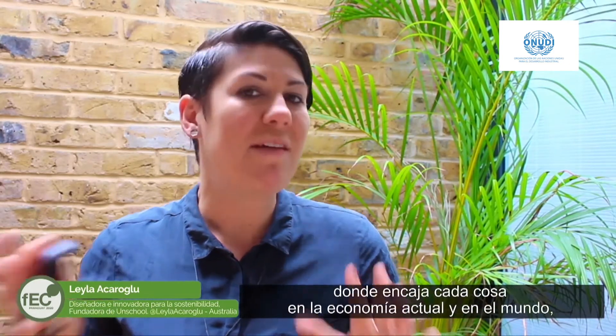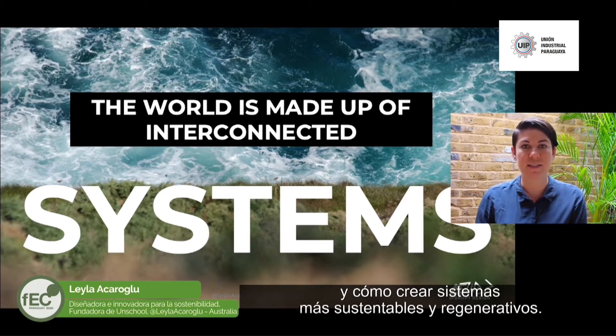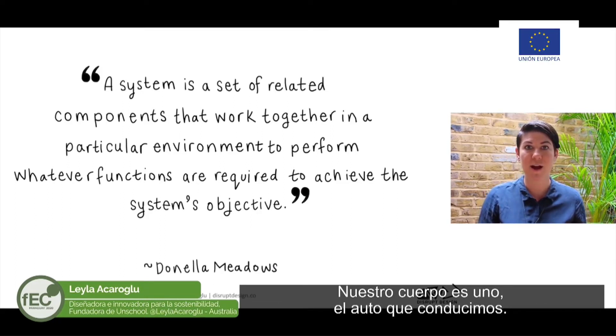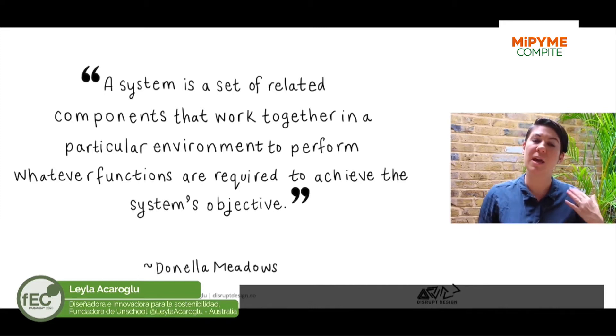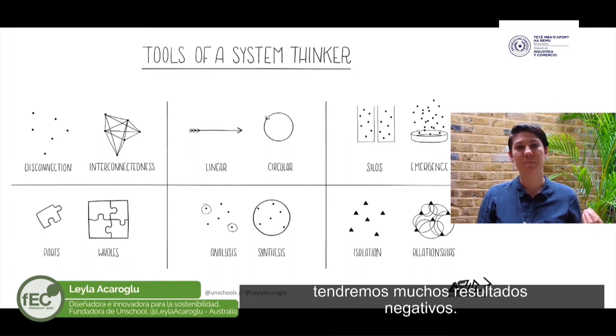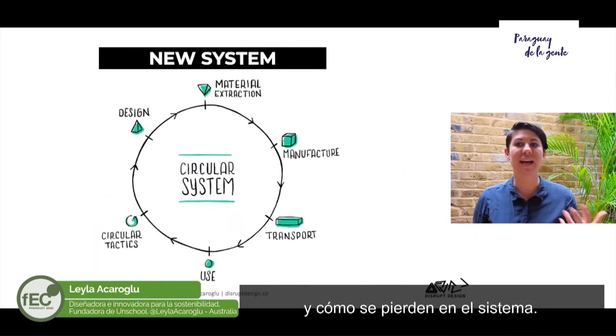If we look at these two systems, we can design goods and services that fit within each one, because the world is made up of complex systems and systems thinking helps us understand where things fit within the current economy, the interaction and relationships between those things, and how we can create more regenerative and sustainable systems. A system is really anything around us — our body is one, the cars we drive are one. They all interact; if we don't have fuel or electricity or a working wheel, the car won't work. Equally, if we can't create systems that are fully sustainable, we will have a lot of negative system outcomes. Seeing relationships between things and identifying this linear system — and transitioning to the circular system — requires us to understand how things connect and how things are lost from the system.